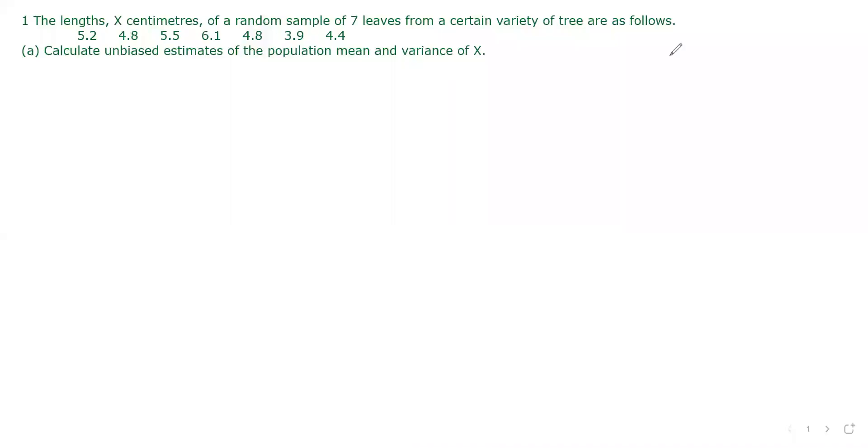We discussed A-level mathematics paper 6, probability and statistics 2 in May or June of year 2020. The length in centimeters of a random sample of 7 leaves from a variety of trees are as follows. We are given the length of 7 tree leaves, so n is 7.